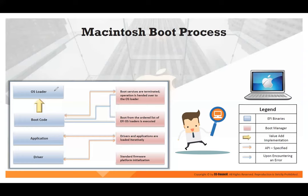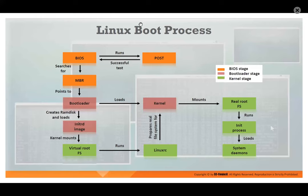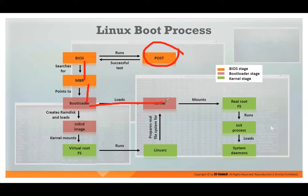The Mac boot process uses a different method — boot code, bootloader, application, and drivers. Linux uses a different method: BIOS runs POST — power on self-test — to check all hardware. On successful test, it goes to MBR, then the boot loader, which loads the kernel. The kernel mounts different file systems, runs them, and loads the daemon — which is the process.